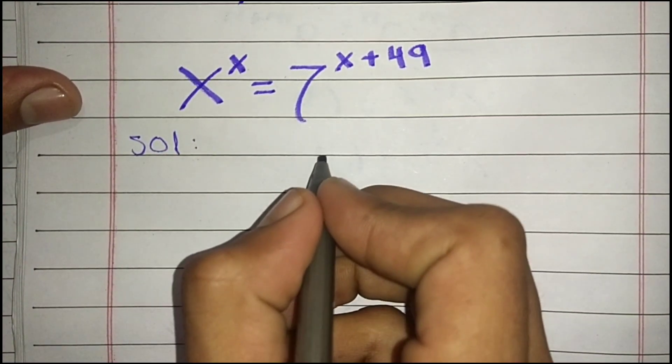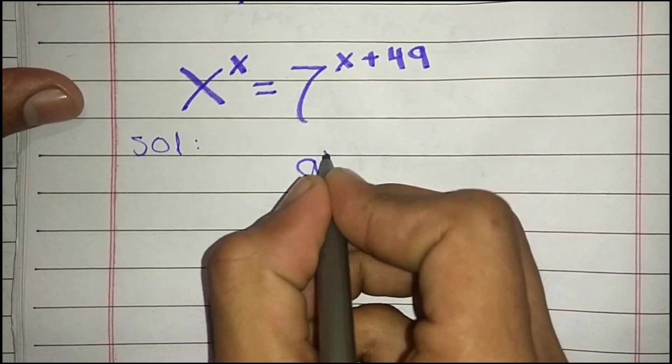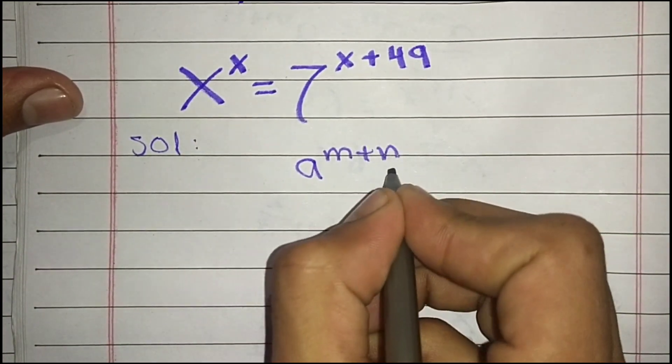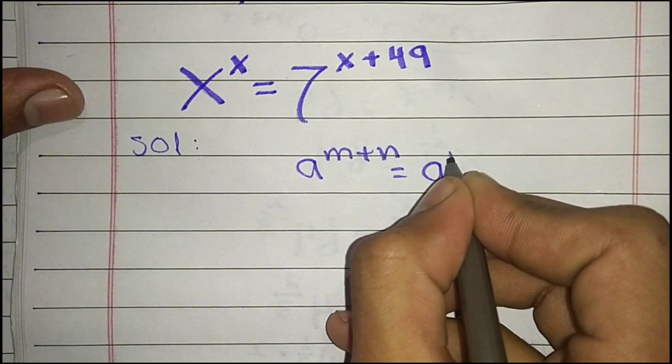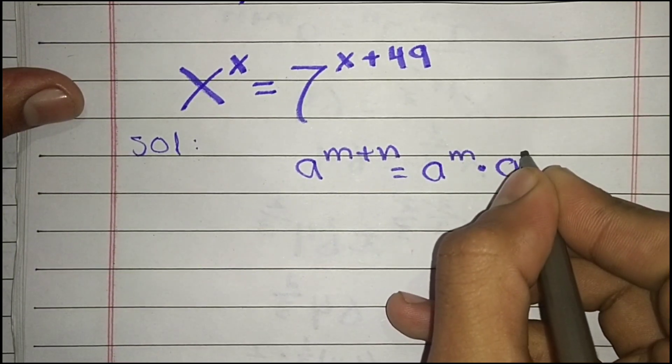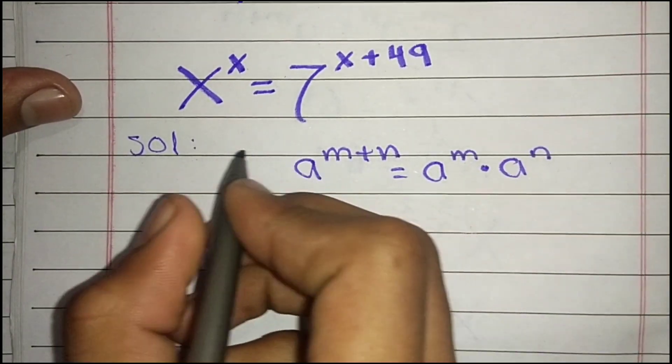Let's go to the solution. We have the property that a^(m+n) = a^m × a^n.